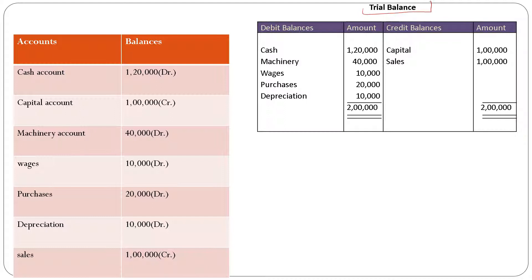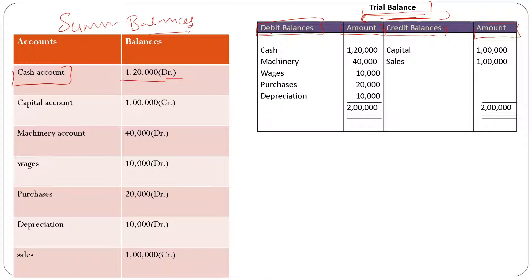This is the trial balance in T-shape format, where we mention the date and particular account name, debit balances on the left side with amounts, and credit balances on the right side with respective amounts. Let's start preparing the trial balance from the summary of balances. Cash account is a debit balance — one lakh twenty thousand rupees on the debit side. Capital has a credit balance of one lakh rupees on the credit side. Machinery has a debit balance.